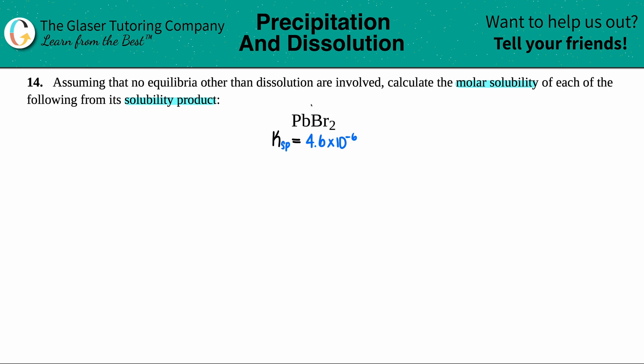So we have to find the molar solubility of lead two bromide from its solubility product. And remember, the solubility product is just a Ksp, solubility product. So I went in the back of the textbook to find out what the Ksp value is for PbBr2, because without it, we can't do this problem.